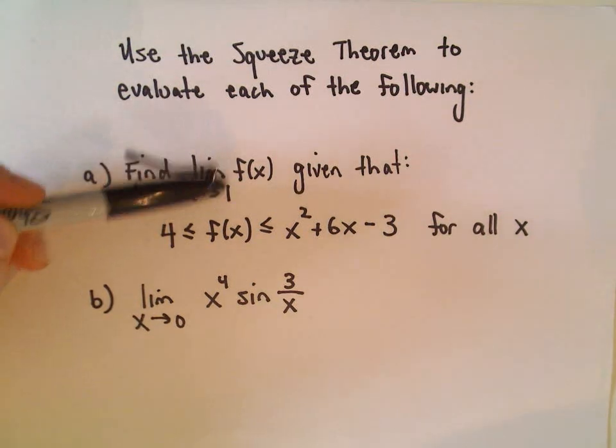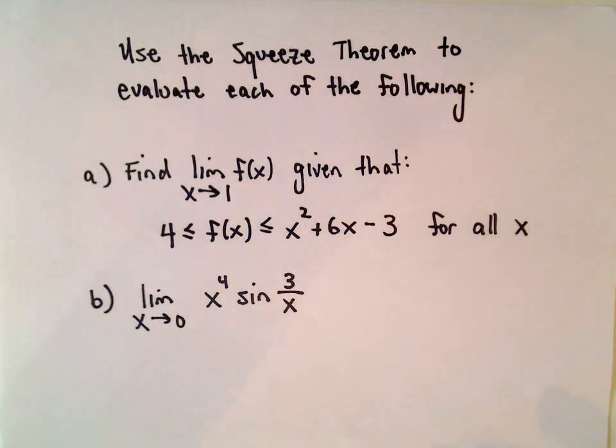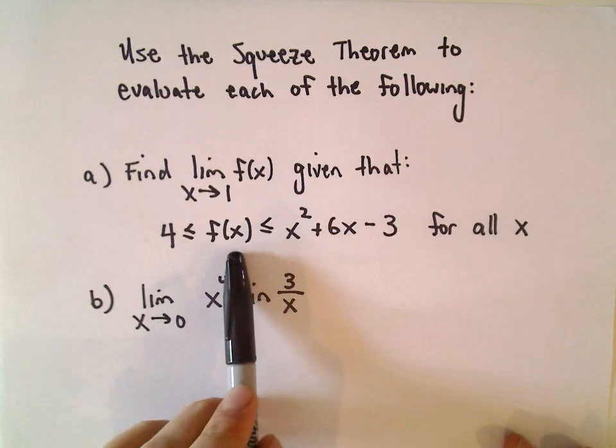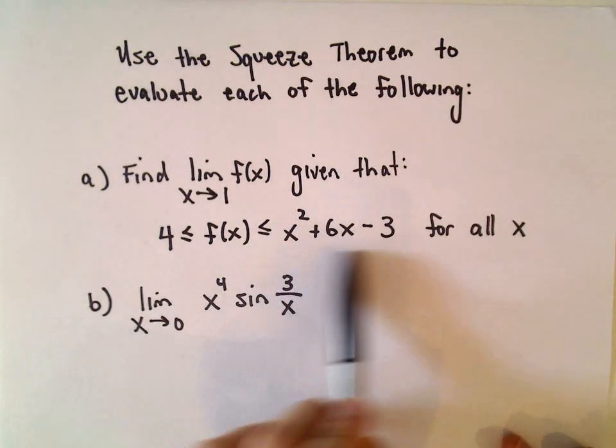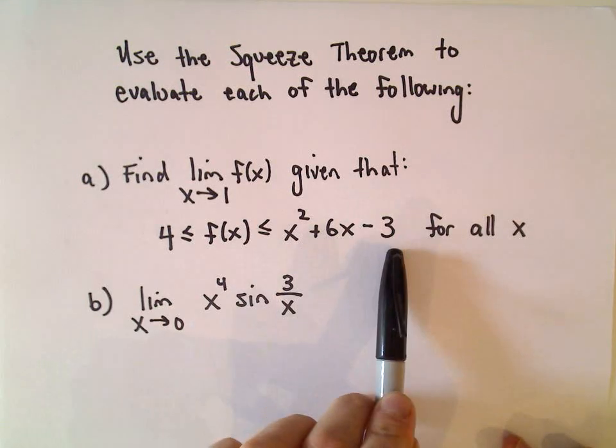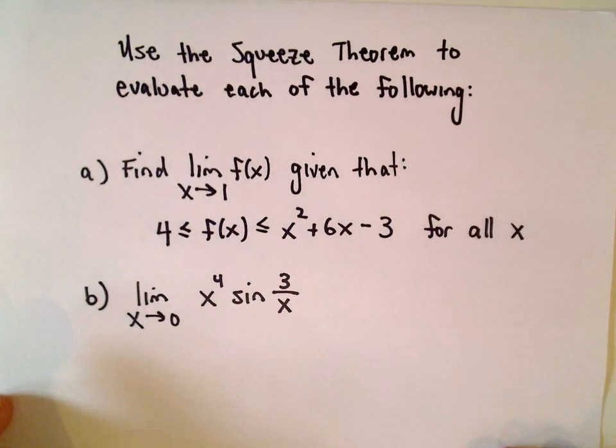So we want to find the limit as x approaches 1 of f of x, and we're given the information that f of x is always greater than or equal to 4, and is always less than or equal to x squared plus 6x minus 3 for all values of x.